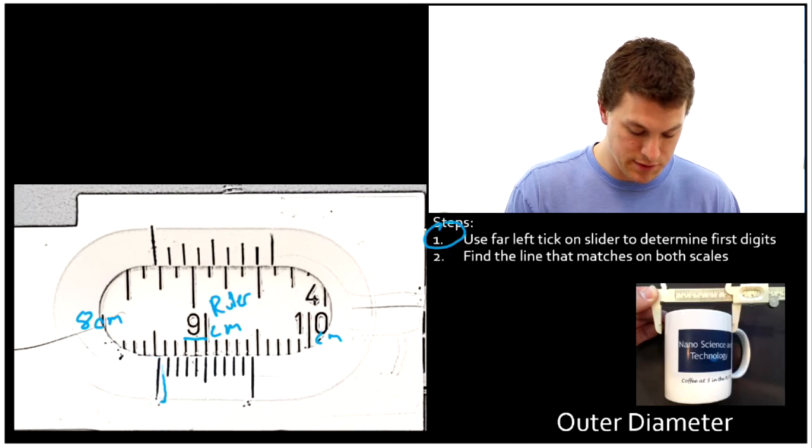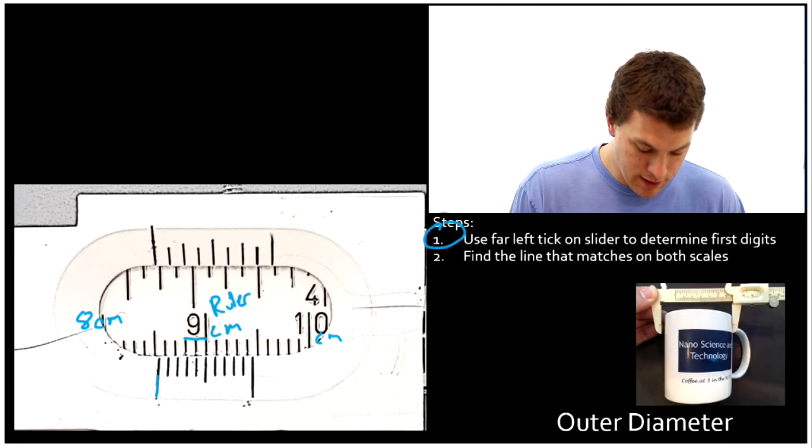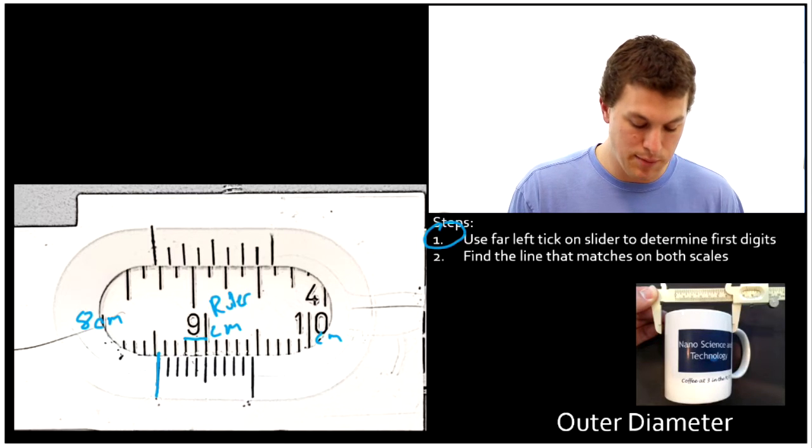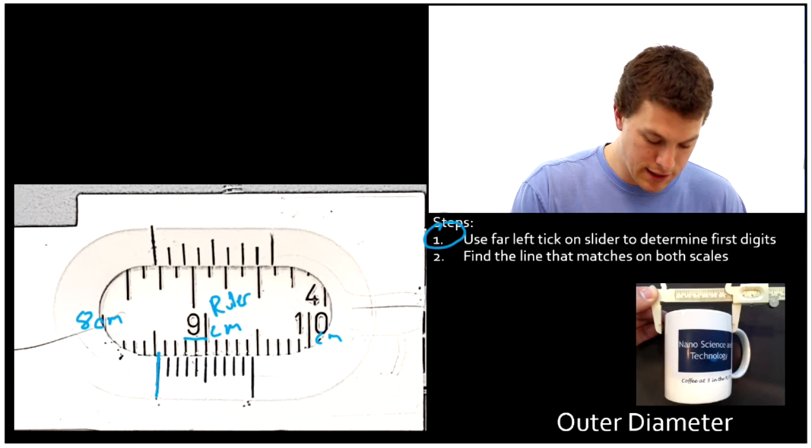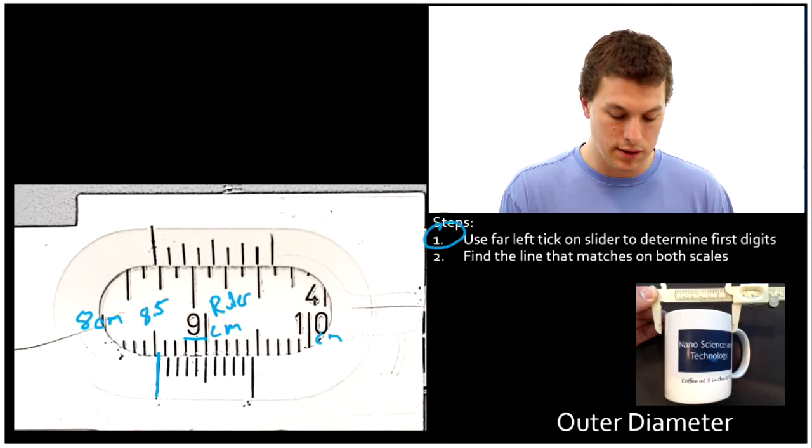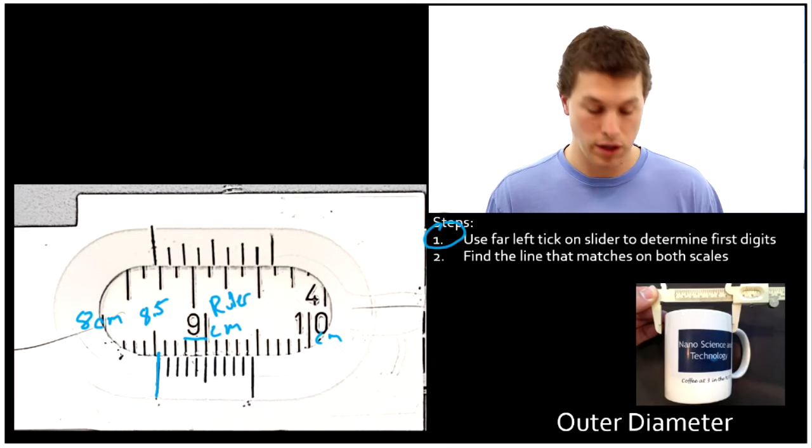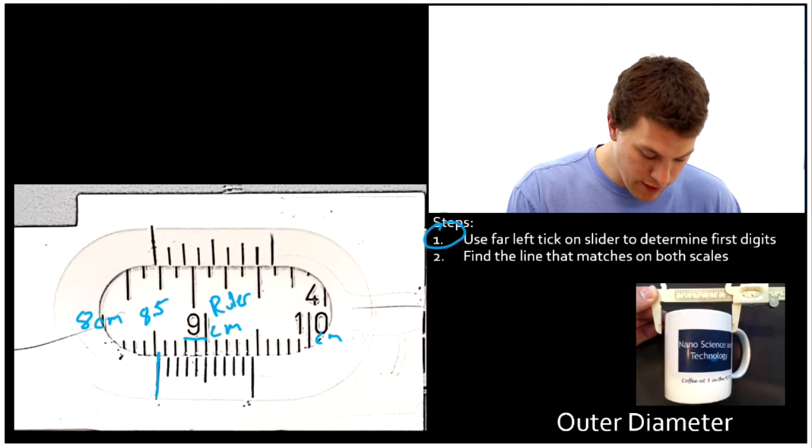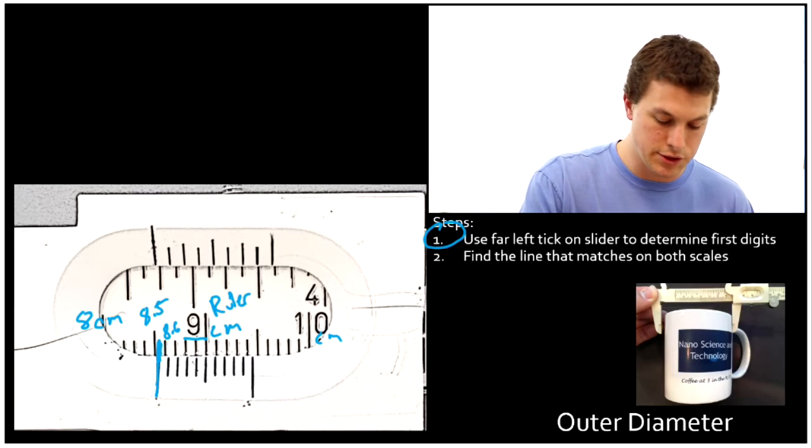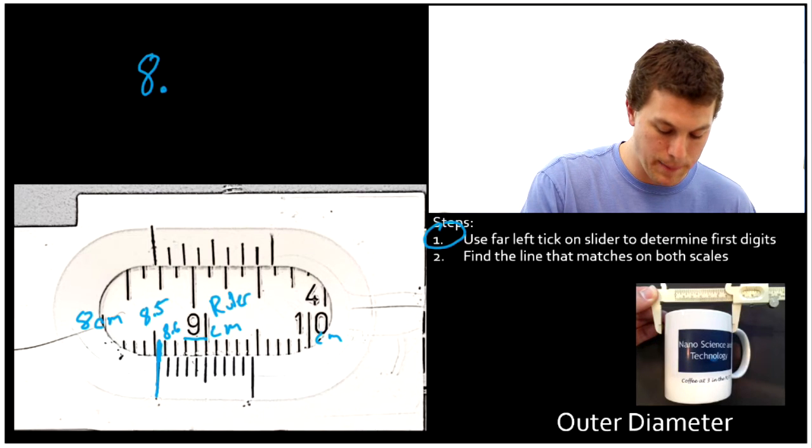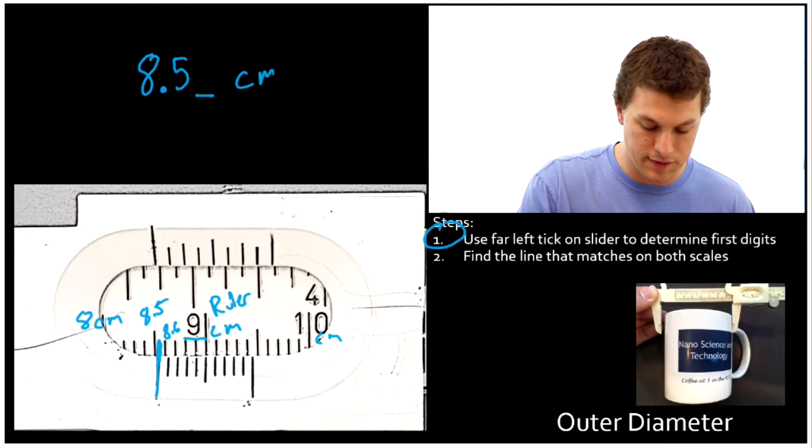This tick lines up right there. Notice this slightly taller tick in between eight and nine is going to be 8.5, and each one of the little ticks here represent 0.1. So this line falls right here between 8.5 and 8.6, and that means the first two things we're going to write down are 8.5. Now we're going to fill in this last digit, and that's going to be in centimeters.